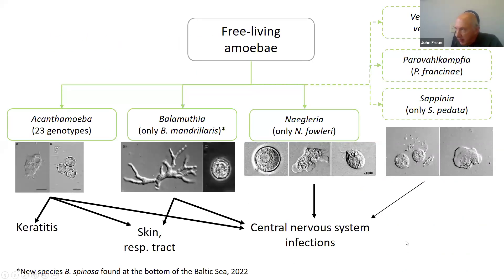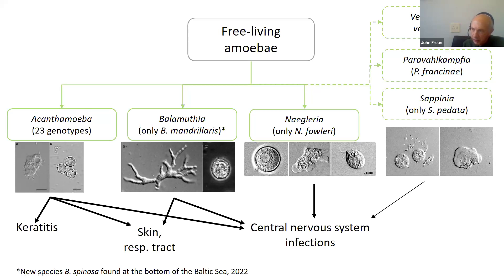Out of all the thousands of free-living amoeba species, there are really three important genera: Acanthamoeba, Balamuthia, and Naegleria. Starting with Acanthamoeba — there are a number of species, some regarded as pathogenic and others non-pathogenic. A more useful classification is via genotype.